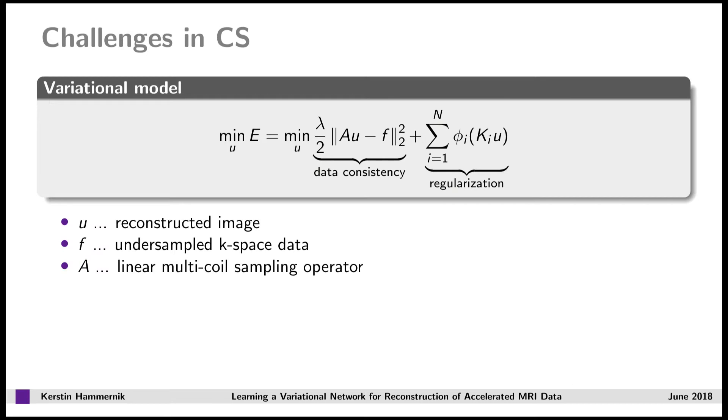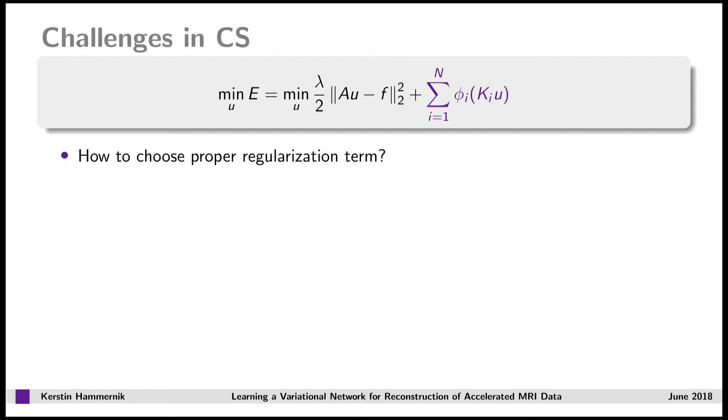Let's have now a closer look at the challenges of compressed sensing, and we start here with the formulation as a variational model. The variational model consists of a data consistency term and a regularization term. The questions here are, how do we choose a proper regularization term?